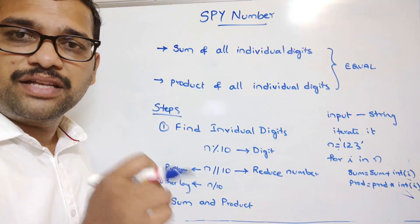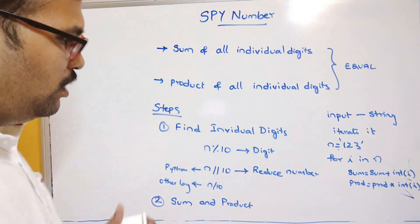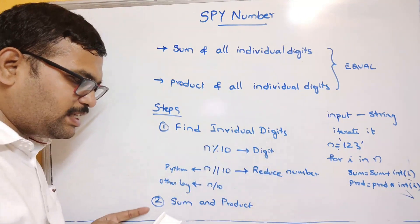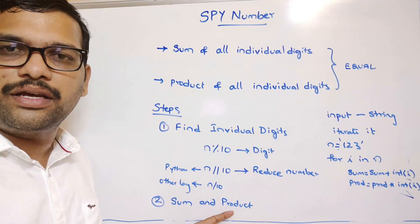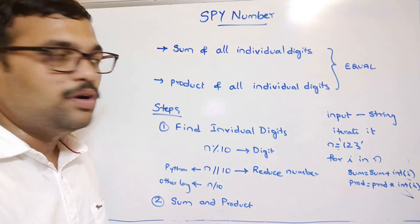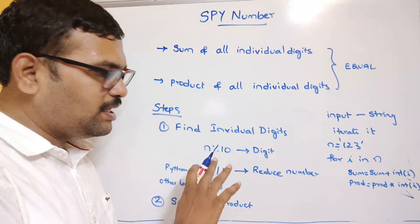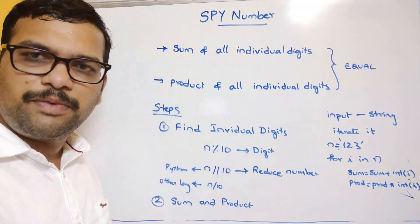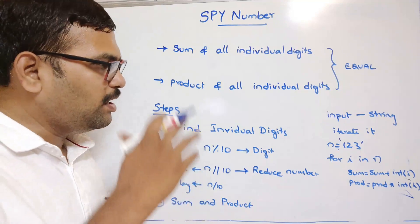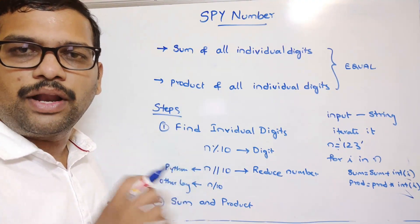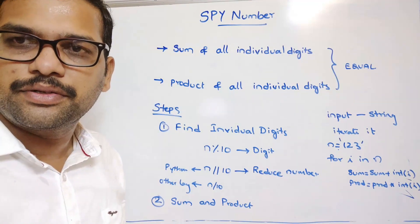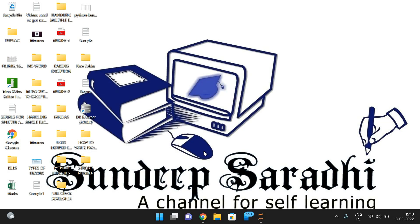So first we need to find the individual digits, and in the second step find the sum and product of all individual digits. Let's move on to the system and I will execute the same logic in Python — you can use the same logic in C, C++, or Java as well.